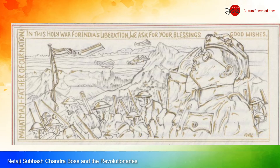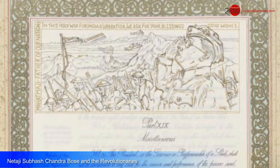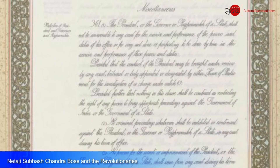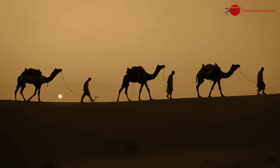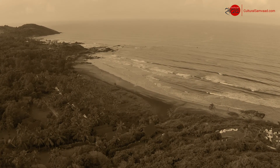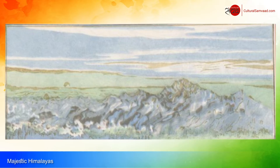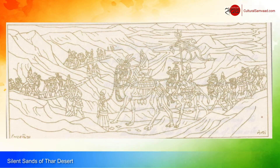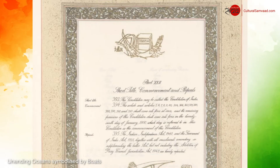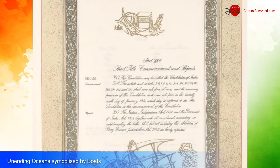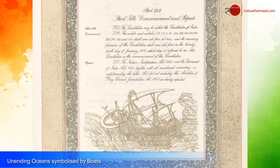The gallant Netaji Subhash Chandra Bose and his fellow patriots adorn Part 19 of our Constitution as the nation's homage to the great revolutionaries who led the Indian freedom movement. India that is Bharat boasts of unparalleled natural heritage — stunning and evocative artworks depicting the proud and majestic Himalayas and the silent and vast deserts are showcased in Parts 20 and 21 respectively. The boats depicted in Part 22 remind us of the unending oceans that make Hindustan sare jahan se achha.